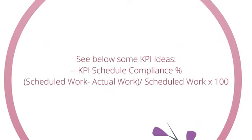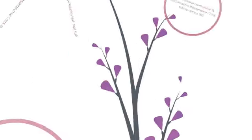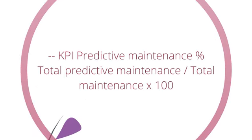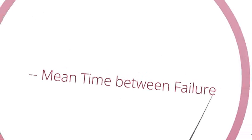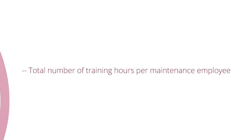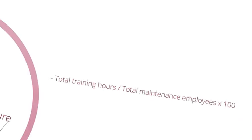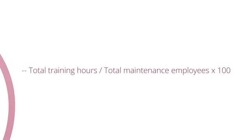KPI Schedule Compliance Percent: Actual Work divided by Scheduled Work, times 100. KPI Productive Maintenance Percent: Total Predictive Maintenance divided by Total Maintenance, times 100. Mean Time Between Failure. Total Number of Training Hours per Maintenance Employee: Total Training Hours divided by Total Maintenance Employees, times 100.